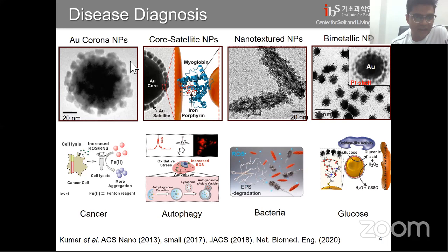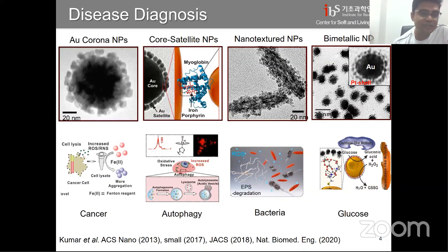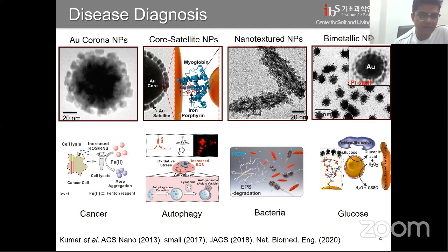Starting with the gold corona nanoparticles — it's not the coronavirus, don't worry. It has a very solid core that is nanotextured on the surface, with nano-cavities where you can put any kind of Raman reporter and any kind of linker. In this case, we use glutathione, which binds directly to the reactive oxygen species of the cells. By using this particle, we can do real-time assay for oxidative stress and differentiate between cancer and normal cells.